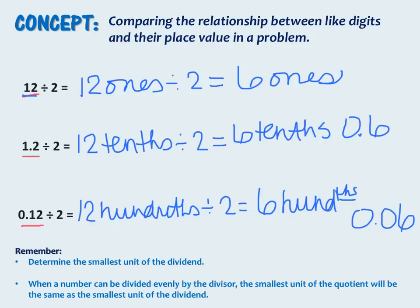So remember: find the smallest unit of the dividend, because when a number can be divided evenly by the divisor, the smallest unit of the quotient will be the same as the smallest unit of the dividend.